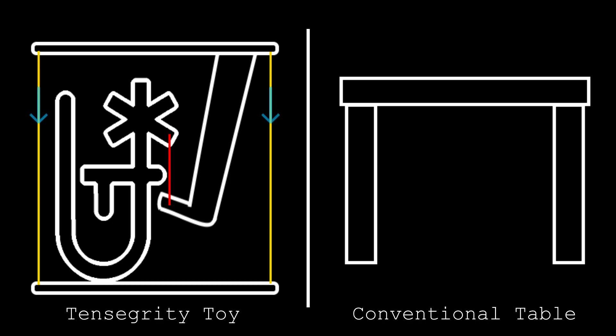Essentially, what you're looking at is a hanging tabletop, where tension is used to keep the table upright and balanced, instead of compression forces you would usually find in a normal table with standard legs.